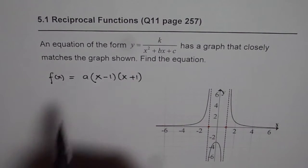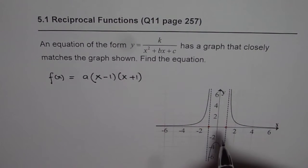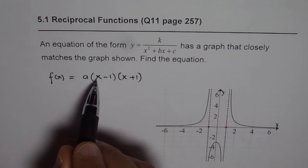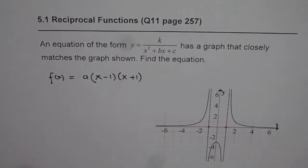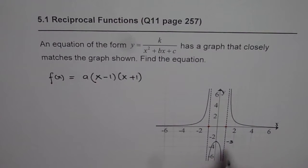Now to find the value of a, we can look for local maximum of this, rather local minimum of this quadratic function, which will be reciprocal of the local maximum here. This value for the reciprocal function is minus 3. Reciprocal of minus 3 is what? Reciprocal of minus 3 is minus 1 over 3.